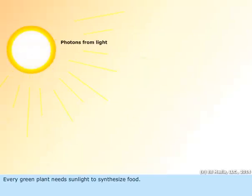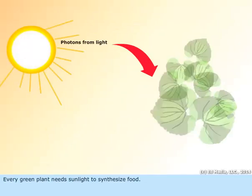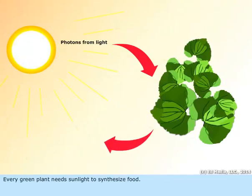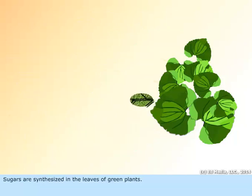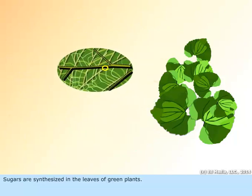Every green plant needs sunlight to synthesize food. Sugars are synthesized in the leaves of green plants.